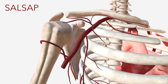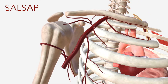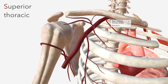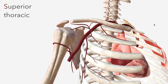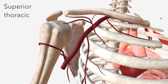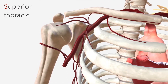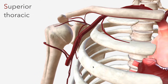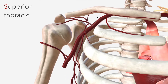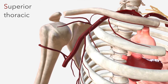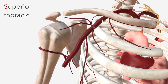We begin with the superior thoracic artery, which, along with each of the first three branches of the axillary artery, supplies part of the pectoralis major and minor muscles. The superior thoracic also supplies the intercostal muscles, as well as subclavius.